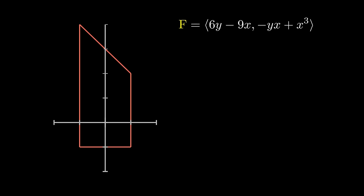Now, let's look at an example of how this can be used. Let's say we have a vector field F is equal to 6y minus 9x and minus yx plus x cubed. And the curve C is the curve over here. Let's try to calculate the line integral of F over C. Green's theorem states that the line integral of this vector field over C is equal to the double integral of the two-dimensional curl over the region inside of that.